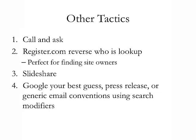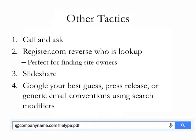Finally, you can Google your best guess and hope there's a press release or generic document out there containing somebody's email address. You can use search modifiers in addition to generic email conventions — for example, searching a popular email convention at the company name dot com with the search modifier filetype:PDF. This limits results to PDF documents hosted on websites, which often contain email addresses.